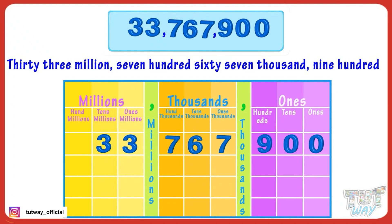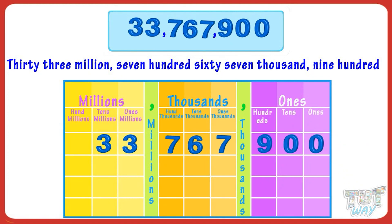So kids, we just have to read the number in every period and name it with the period name. If you know how to read a three digit number and know the period names, you can read any number. After every three digits from the right there is a comma, and each comma has a name. The name of the first comma from the right is thousands, and the name of the second comma from the right is millions.